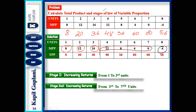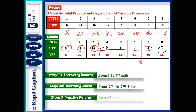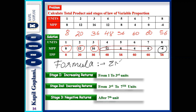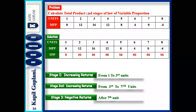It was an easy question — you just have to add the MPs. These types of questions will come in the exam. Always mention the formula: the summation of MP gives total TP.